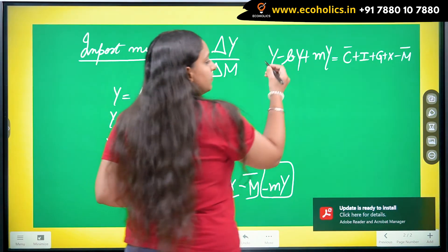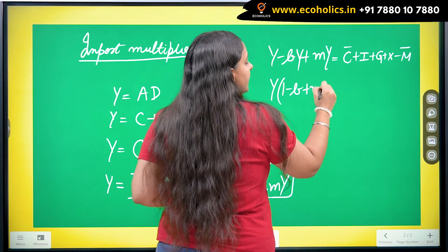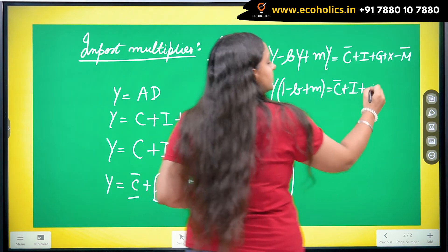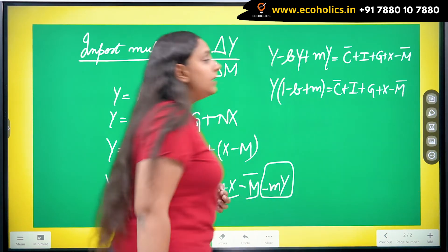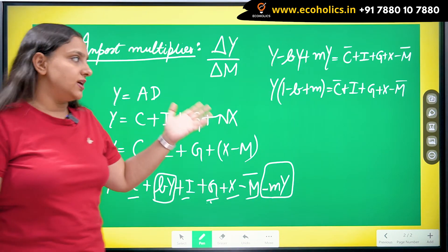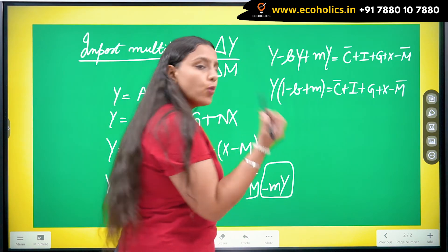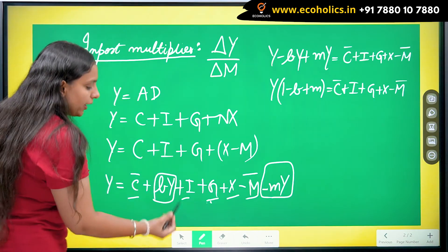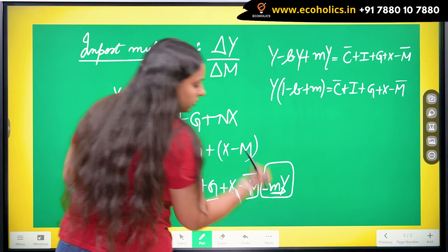Let me take Y common. I am going to get 1 minus B plus M equals to C bar plus I plus G plus X minus M bar. Now, I am saying that the imports are changing. Whenever imports will change, the imports are going to change income in two ways. They are going to affect income here and they are going to affect income here.